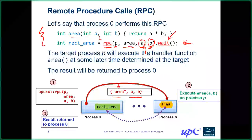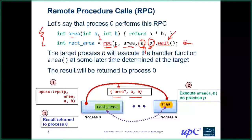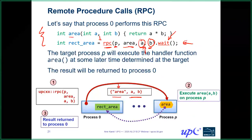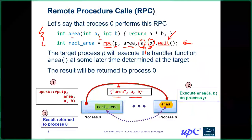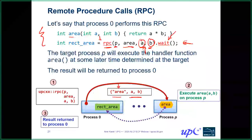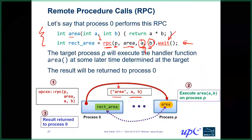On the point of executing area on process P if all the data is on process 0: that's a good point for this trivial example. Typically what you'd want is an RPC that actually accesses something on process P as well. One of the main reasons to use RPC is to avoid unnecessary transfers of data — to move computation rather than data.